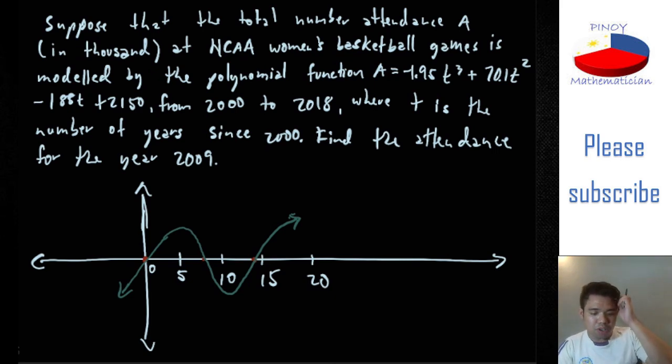So we're going to, the problem here is to find the attendance for the year 2009. So we can estimate that since this is, this is year 2000, so that means 2009 is somewhere here, 2009, where T is equal to 9.